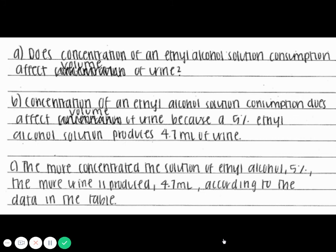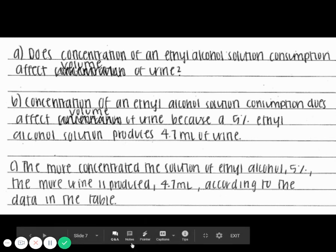If they just said affects volume of urine output—perhaps the more concentrated the solution of ethyl alcohol, 5%, the more urine produced according to the data on the table. So I would give a point for A and C, but not for B.